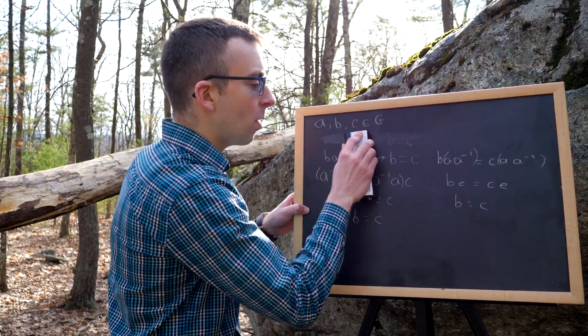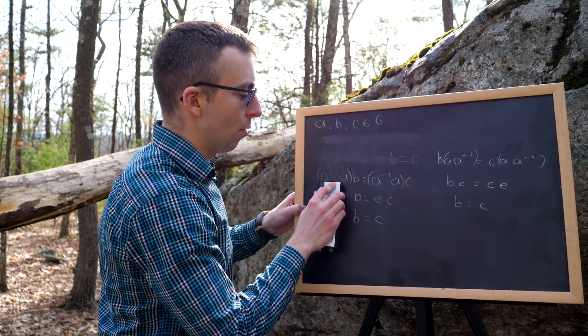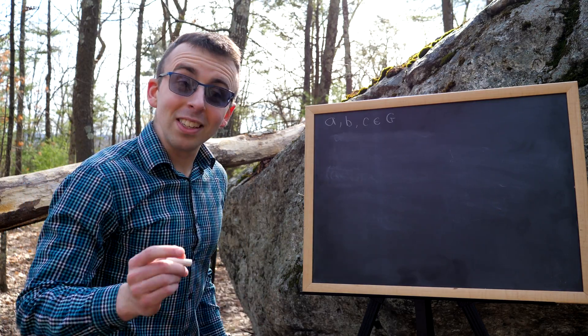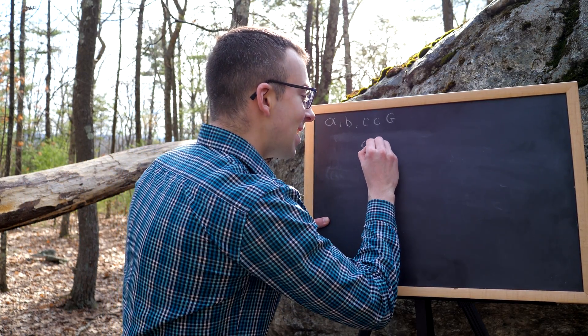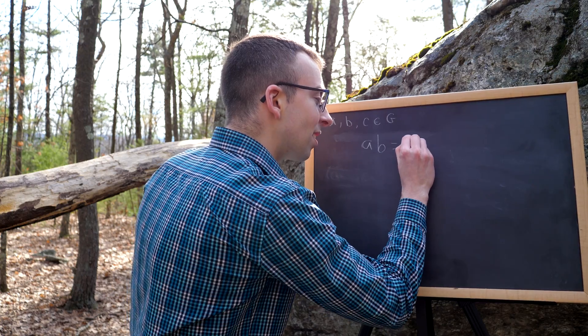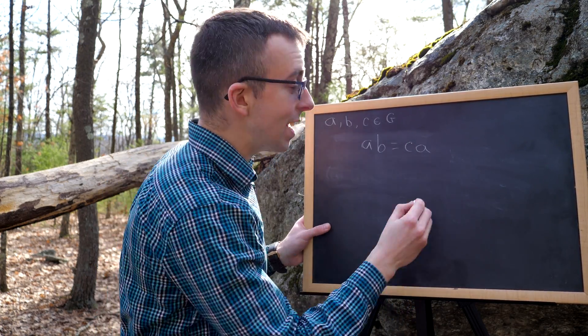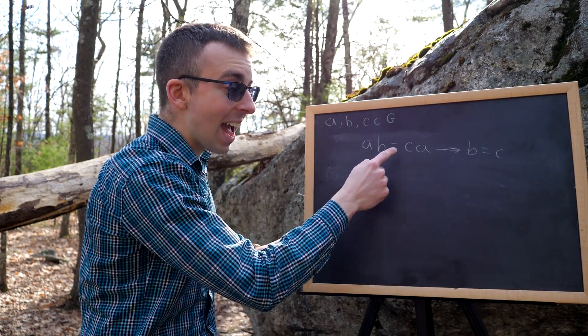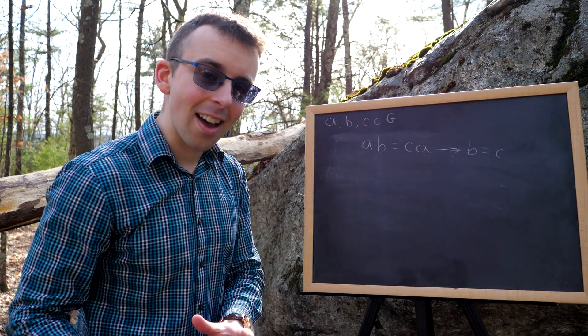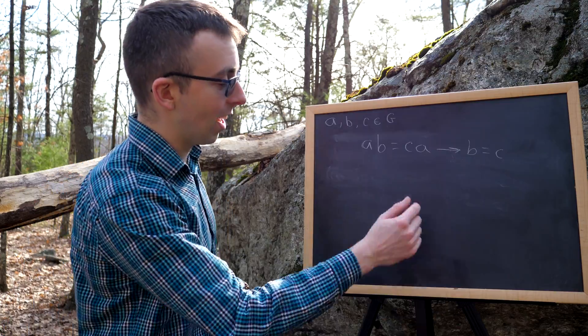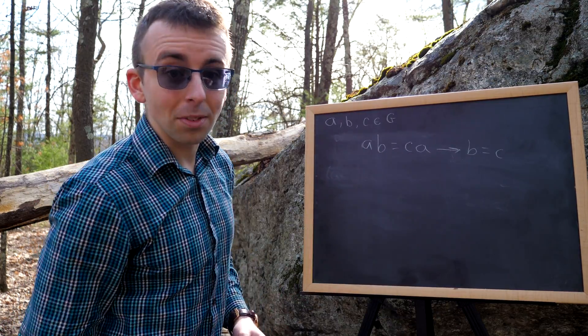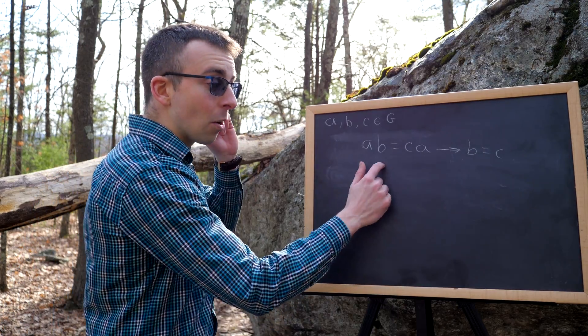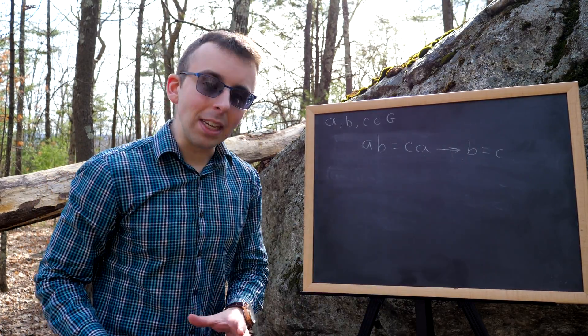One thing that you should notice is something that we didn't prove here. What didn't we prove? We didn't prove that if A times B equals C times A, that we could then conclude that B equals C. A has to be on the same side on both sides of the equation. Either it has to be on the left on both sides, or it has to be on the right on both sides. So here, we cannot conclude that B equals C.